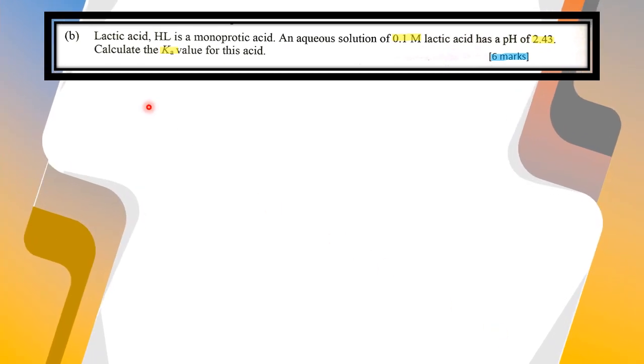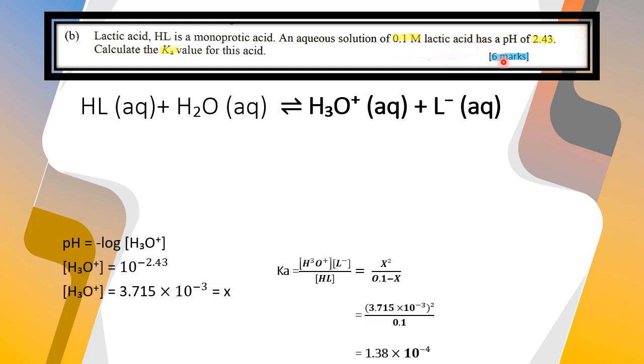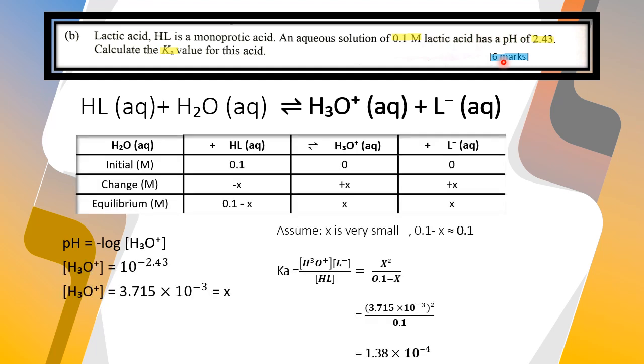Question B: Lactic acid is monoprotic acid. An aqueous solution of 0.1 molar lactic acid has a pH of 2.43. Calculate the Ka value for the acid, 6 marks. Okay, first we need to write the equation and next we write the ICE table.